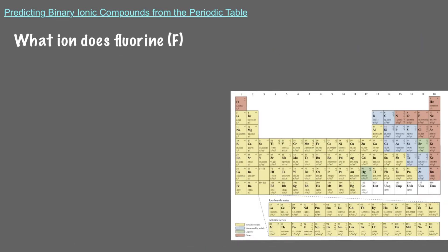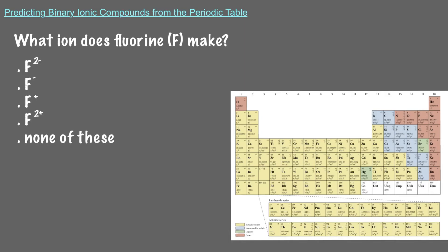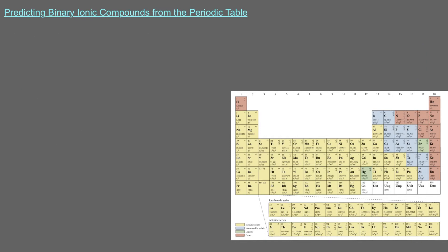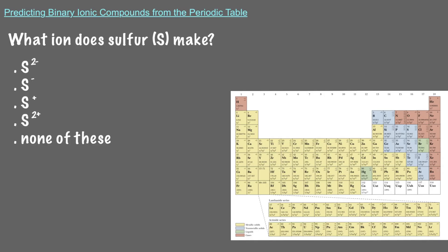What ion does fluorine make? Since fluorine is a halogen, part of group 17 of the periodic table, it will always make an anion with a negative 1 charge. What ion does sulfur make? Sulfur is a nonmetal in group 16 of the periodic table, and so it will make an anion with a negative 2 charge.